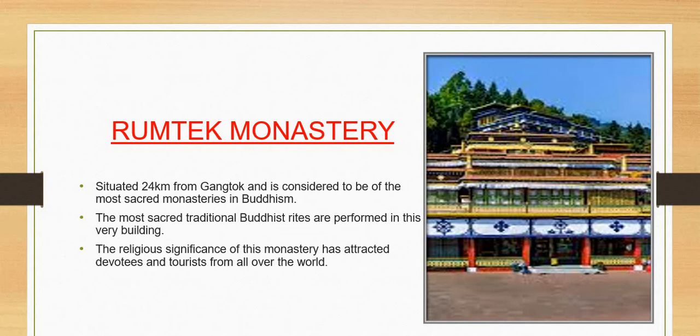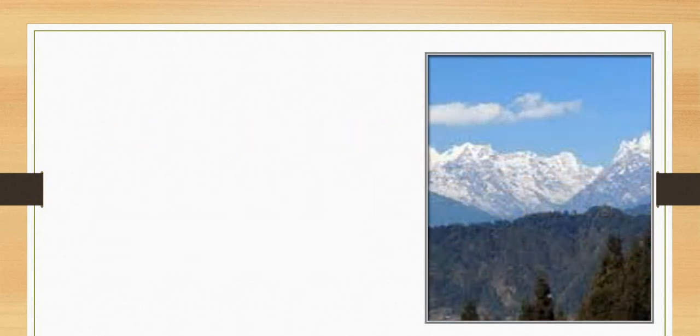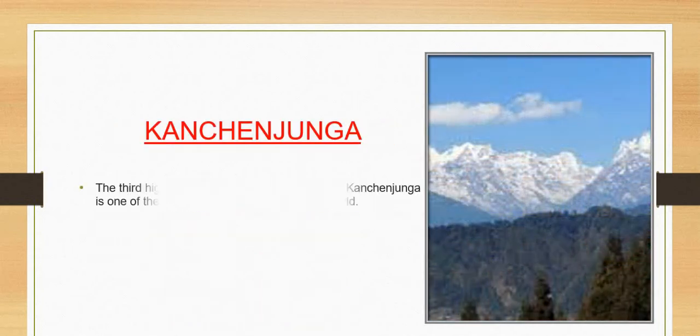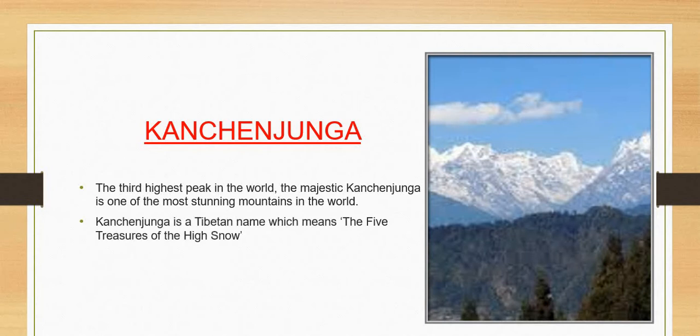Rumtek Monastery is situated 24 kilometers from Gangtok and is considered one of the most sacred monasteries in Buddhism. The most sacred traditional Buddhist rites are performed here, and its religious significance has attracted devotees and tourists from all over the world.